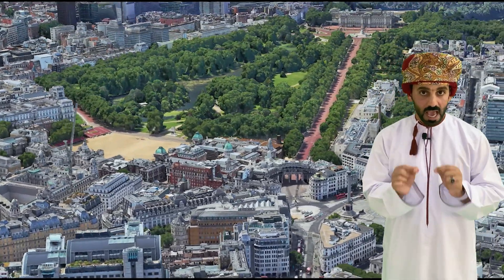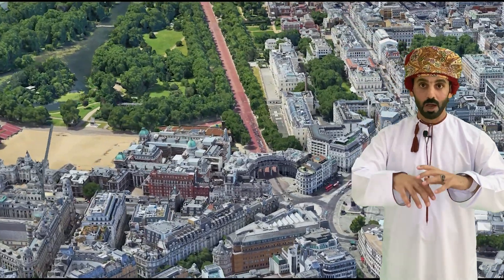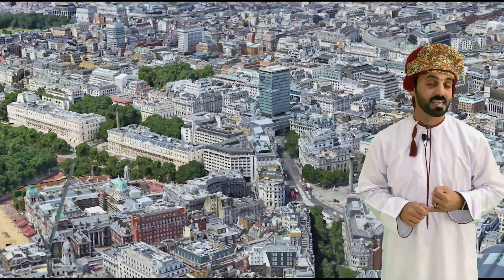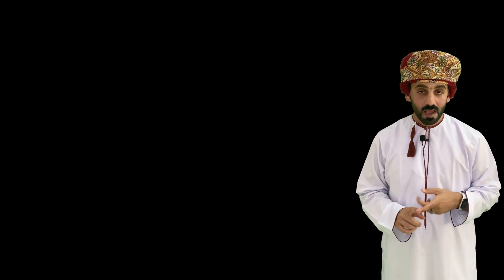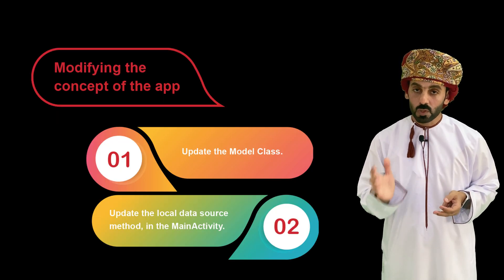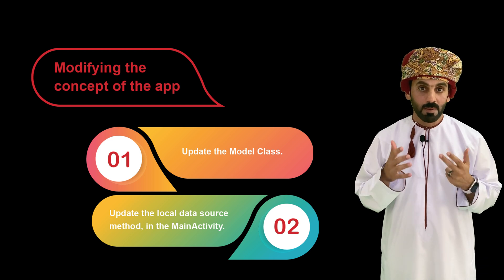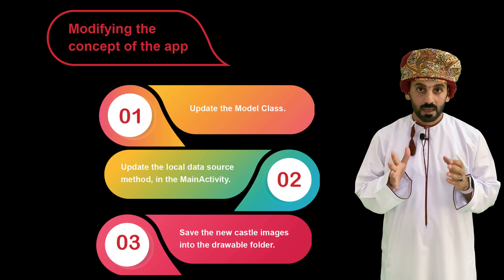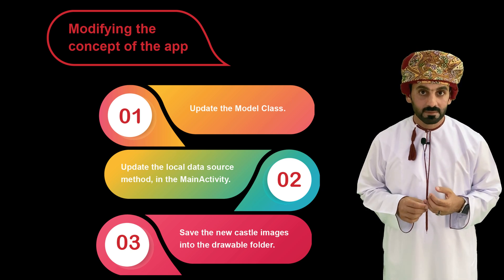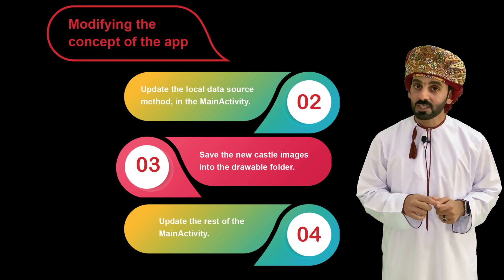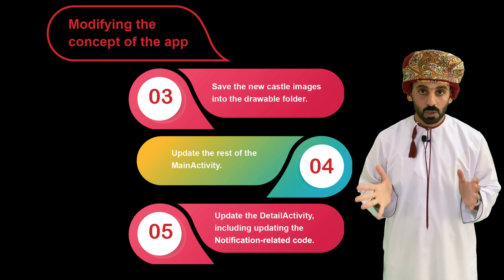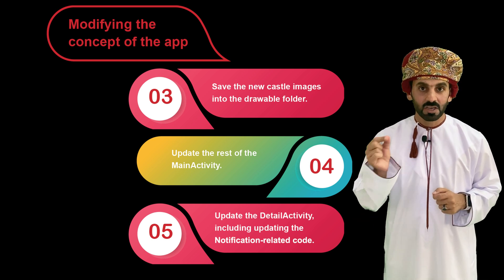To be able to turn our movies app into our castles and forts app, let's modify our code and follow these steps. Step one: update the model class. Step two: update the local data method source to reflect the new data about forts and castles. Step three: save the castle-related images into the drawable folder. Step four: update the rest of the main activity. Step five: update the detailed activity, including updating the notification-related code.